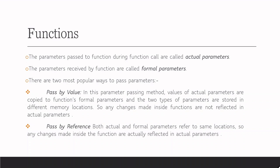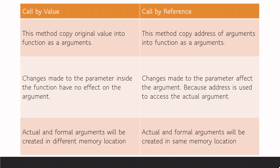So, that is the basic difference. In call by value, the method copies the original value into the function as arguments. In call by reference, it copies the address of the argument. Whenever we pass an address location, the change will be permanent because whatever operations are to be done, it is done at the memory location. So, the change is made on the actual value, not on the copy.